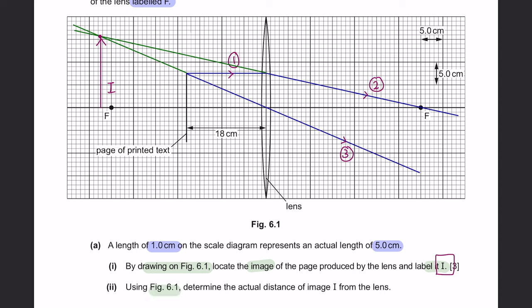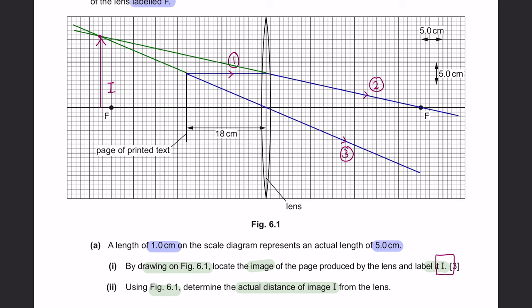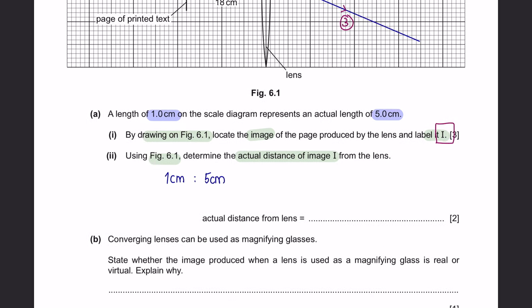Part 2: Using figure 6.1, determine the actual distance of image I from the lens. We first have to find this distance on the diagram. The acceptable range on the answer scheme is 7.1cm to 7.7cm. Since 1cm represents 5cm, I obtained roughly 7.3cm, meaning the actual distance of image I is 36.5cm — which is an acceptable range of answer.